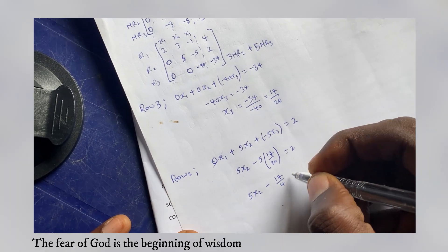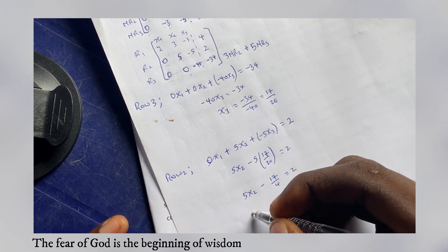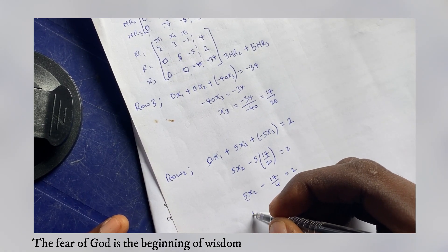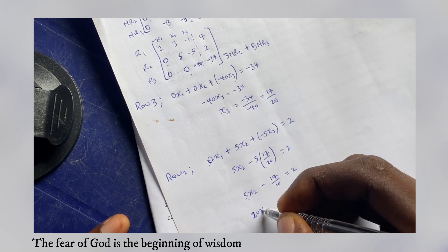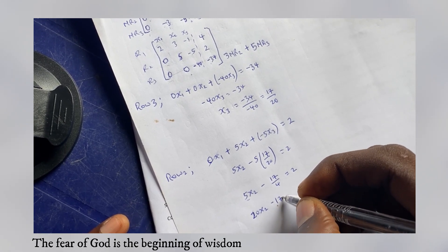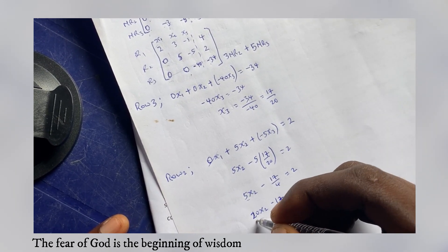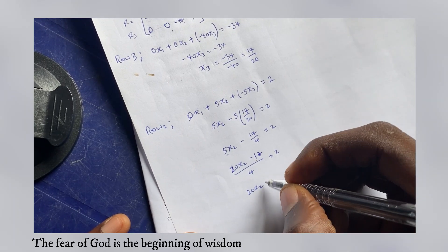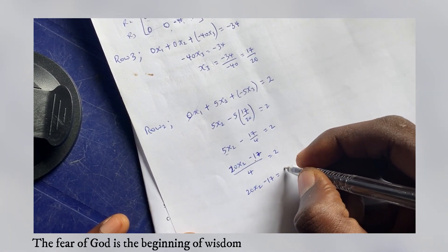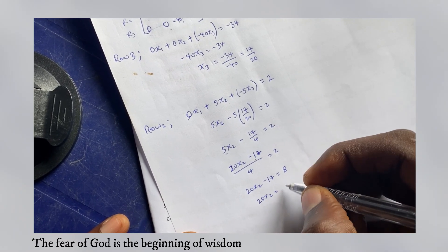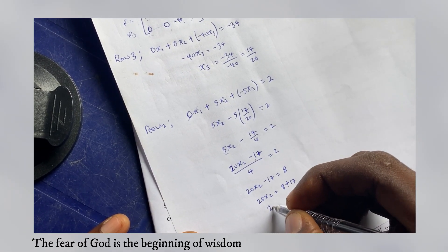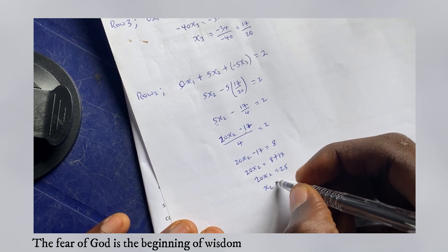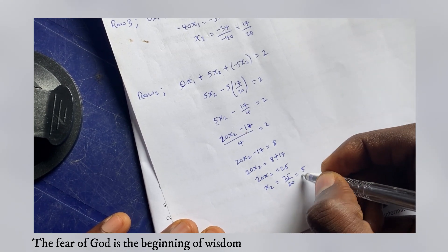Solving for x₂: multiplying through by 4 gives 20x₂ - 17 = 8, so 20x₂ = 8 + 17 = 25, and therefore x₂ = 25/20 = 5/4.